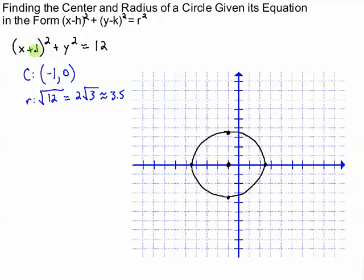Always think about your x and y coordinates being what numbers make the x and y 0. And then the radius is always the square root of the constant on the right side.